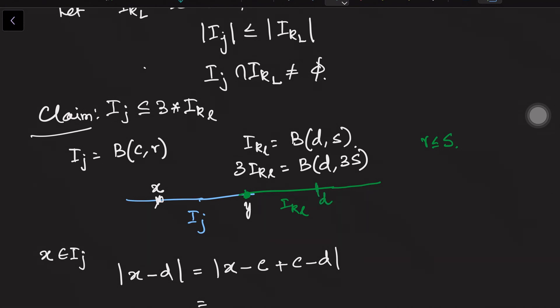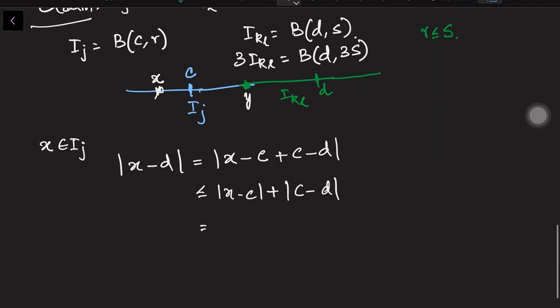So d is the center here and c is the center here and y is in the intersection of i_j and i_kl. So let us go back. So I took |x-d|. So that is going to be less than |x-c| + |c-d|. Now I know this |x-c| is less than or equal to r, but this I do not know, what is the distance between center and center. But I know a point in the intersection. So again the same trick of adding and subtracting that will give me, and then you can write this as.